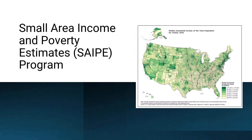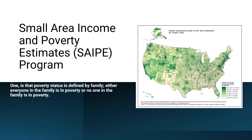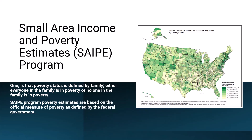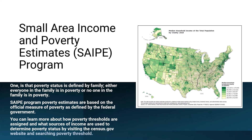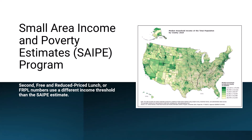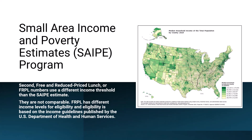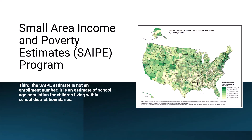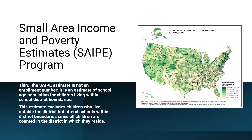There are a few items that are very important to note about these data before we change geographies. First, poverty status is defined by family — either everyone in the family is in poverty, or no one in the family is in poverty. SAPI program estimates are based on the official measure of poverty as defined by the federal government. You can learn more about how poverty thresholds are assigned and what sources of income are used to determine poverty status by visiting the Census Bureau website and searching poverty threshold. Second, free and reduced price lunch, or FRPL numbers, use different income thresholds than SAPI estimates — they are not comparable. FRPL has different income levels for eligibility, and eligibility is based on income guidelines published by the U.S. Department of Health and Human Services. Third, the SAPI estimate is not an enrollment number. It is an estimate of school age population for children living within school district boundaries. This estimate excludes children who live outside the district but attend schools within district boundaries, since all children are counted in the district in which they reside.